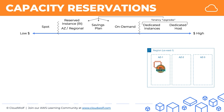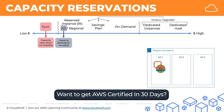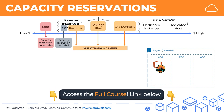In terms of the types of purchase options, capacity reservations cannot be applied to spot instances, simply because of the nature of spot instances. Also, reserved instances of the availability zone type already have capacity reservation included, as we discussed. So really, capacity reservation applies to these three: regional reserved instances, savings plan, and on-demand.